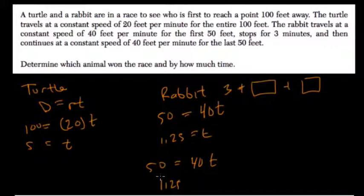So 3 plus 1 plus 1 is 5, plus 0.25, plus 0.25, so 1.25, 1.25, that's 5.5 minutes.